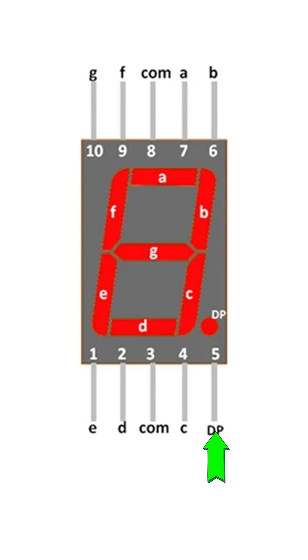The DP pin is just the decimal point LED. You can turn it on or off to show decimal numbers like 3.5.